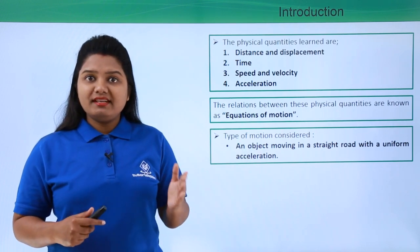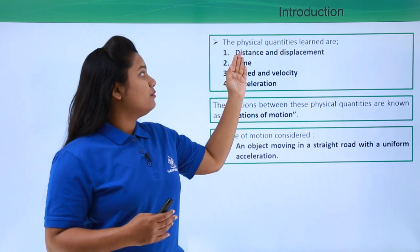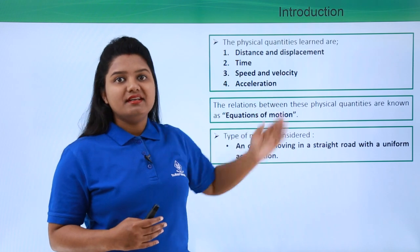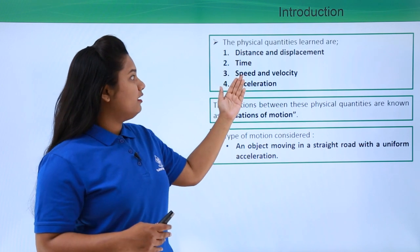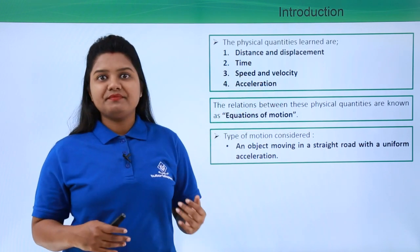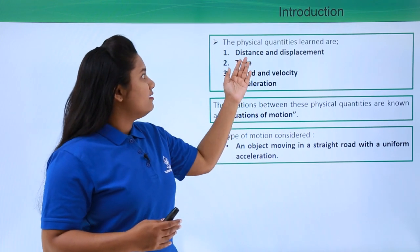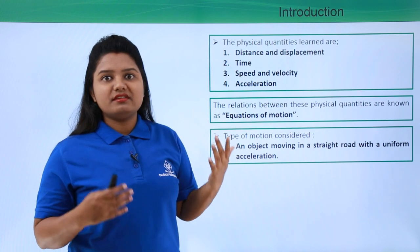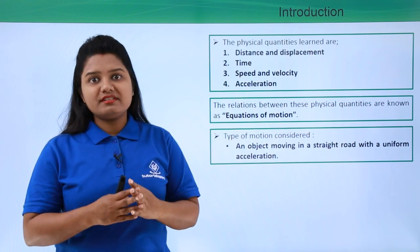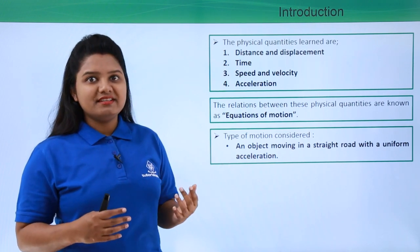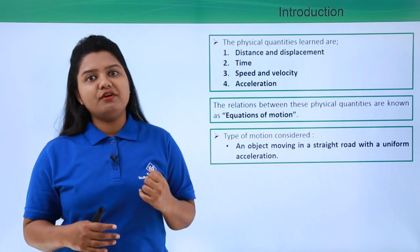Whenever an object is moving in a straight road with a uniform acceleration, there is no difference between the terms distance and displacement since the body is already moving in a straight road. And also there is no difference between the terms speed and velocity. So these terms may be used interchangeably in this module. Don't get confused — this is just because the object is moving in a straight road with uniform acceleration.